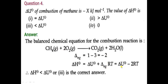So value of ΔNgRT is minus 2RT. When you put the value, ΔH° = ΔU° minus 2RT. That means it will be less than ΔU° because we are subtracting 2RT from ΔU°. So ΔH° is less than ΔU°, meaning the third option is correct.